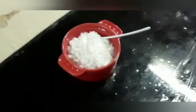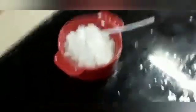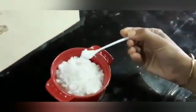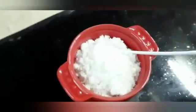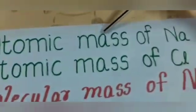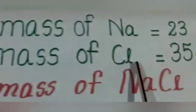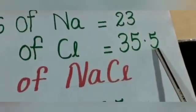This is common salt — in science, Sodium Chloride, NaCl. Here we have 200 grams of NaCl weighed and kept. How many molecules will be there in this 200 grams of NaCl? Using the mole concept: the atomic mass of Sodium is 23, and the atomic mass of Chlorine is 35.5.